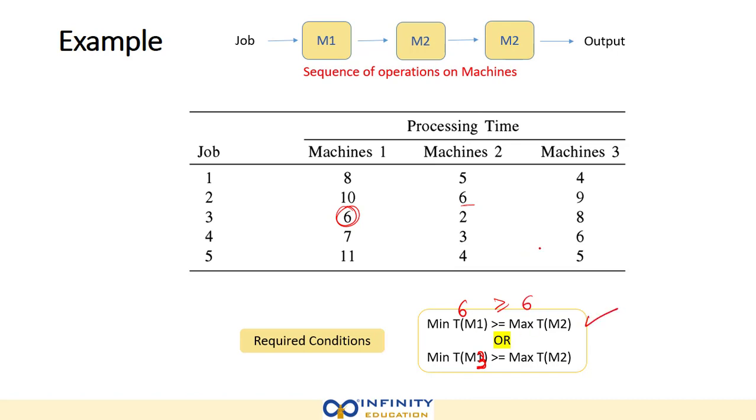For the safer side we will also check this one. So minimum on M3 will be 4. As you can see this condition is not satisfied, but as we can see any of the conditions should satisfy to apply this rule. So let's move ahead.